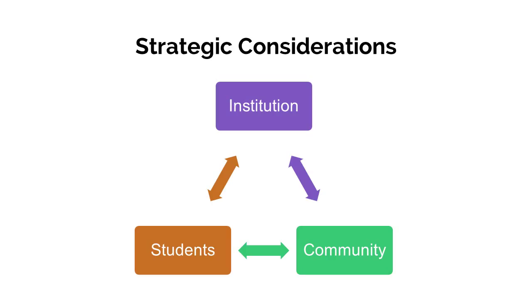While internal stakeholders will be involved in generating the data, continually meeting the challenge of gainful employment will require coordination with external stakeholders as well. In thinking strategically about the gainful employment requirements, it may be helpful to think of the process as a three-legged stool. Institutions must engage with students to ensure that programs are available and provide the appropriate training, and with internal offices to ensure that data is being developed and presented properly, and that program offerings are robust and dynamic enough to allow programs to meet the demands of gainful employment.